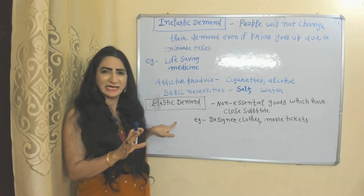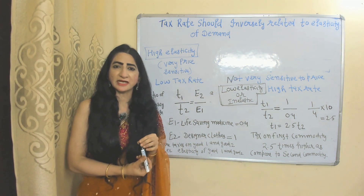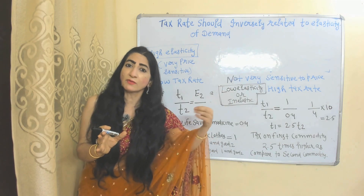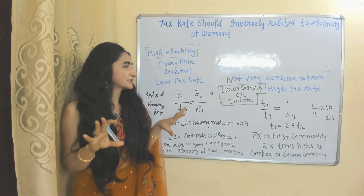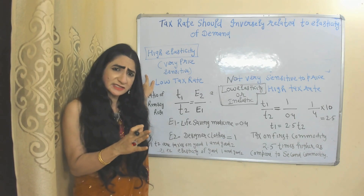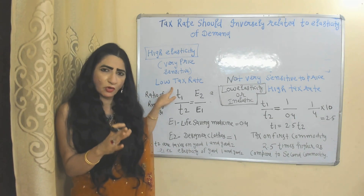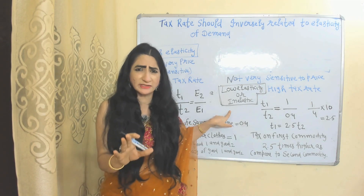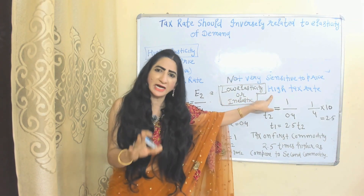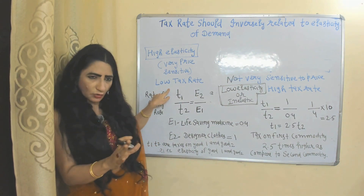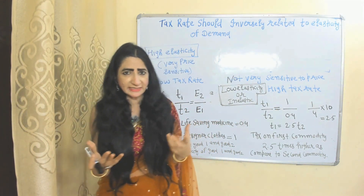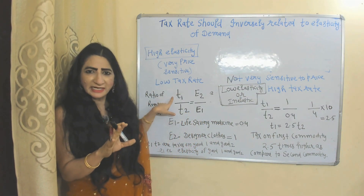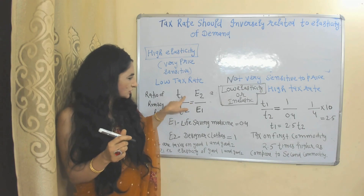That's why, in order to maximize tax revenue, the government should impose higher taxes on goods which demand is inelastic and lower taxes on those goods which demand is elastic. According to Ramsey, the tax rate should be inversely related to the elasticity of demand. High elasticity means goods are very sensitive to price, so the government should impose a low tax rate. Low elasticity means goods are not so sensitive to price, so the government should impose a high tax rate. In summary: high elasticity = low tax rate; low elasticity = high tax rate.